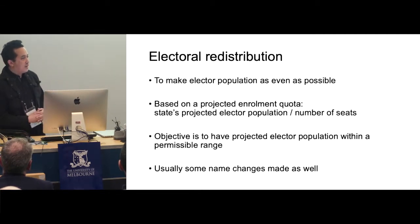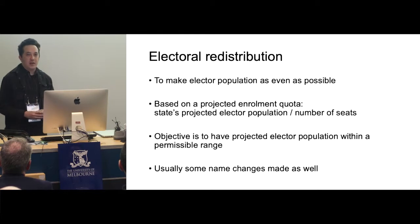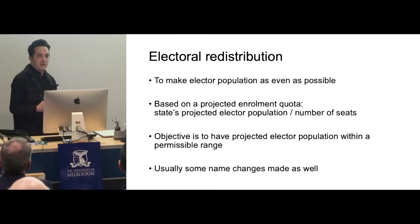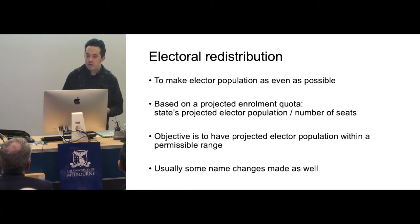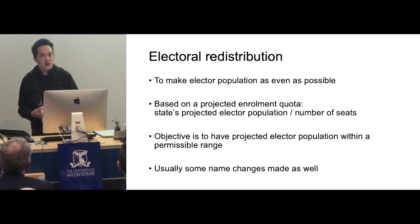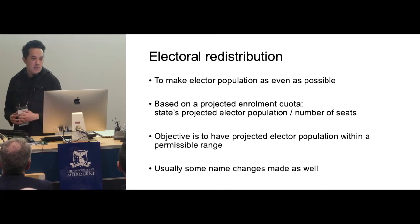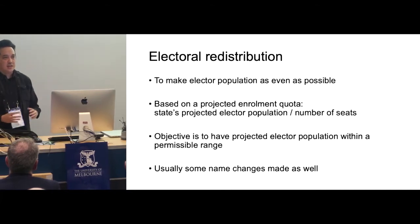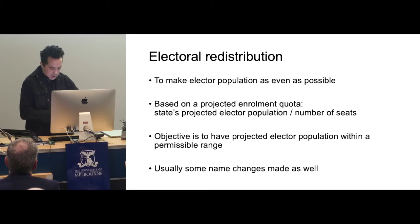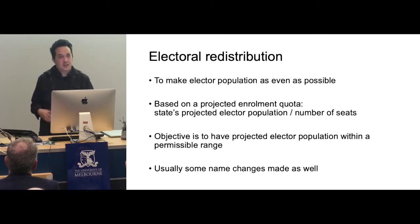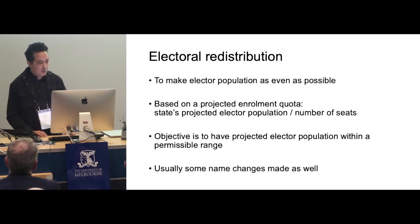So what is an electoral redistribution? An electoral redistribution is when the electorates, electoral districts, or electoral divisions used for an election in a country or a state have their boundaries changed around to try and make the elector population as even as possible. It's just a bit more democratic if each one has about the same — within a region of tolerance — the same number of eligible voters.